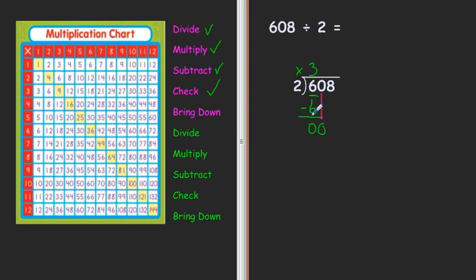So 0 divided by 2 is 0, right? Because you can't divide 0 by 2, so it's going to be 0. So I brought that down. I divide it. I multiply. 0 times 2 is 0.